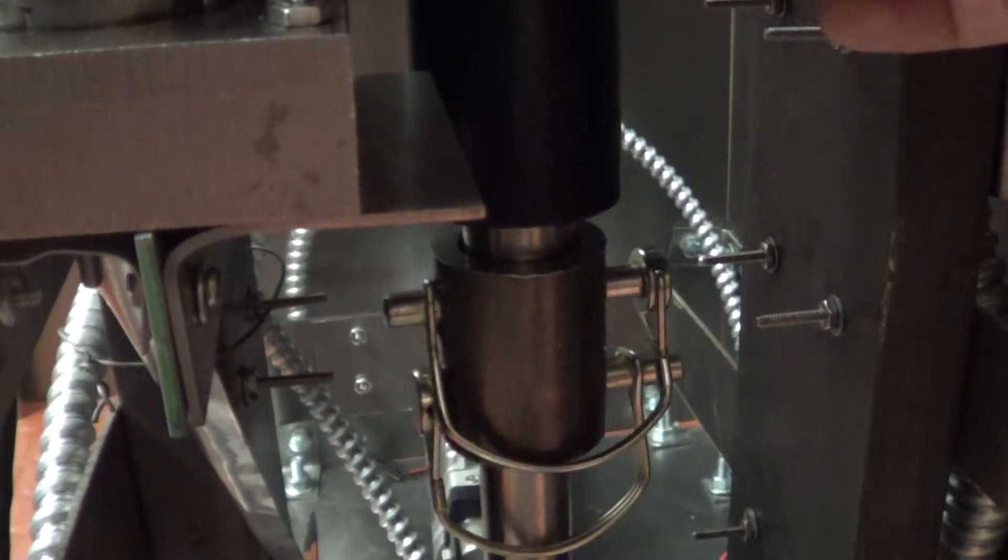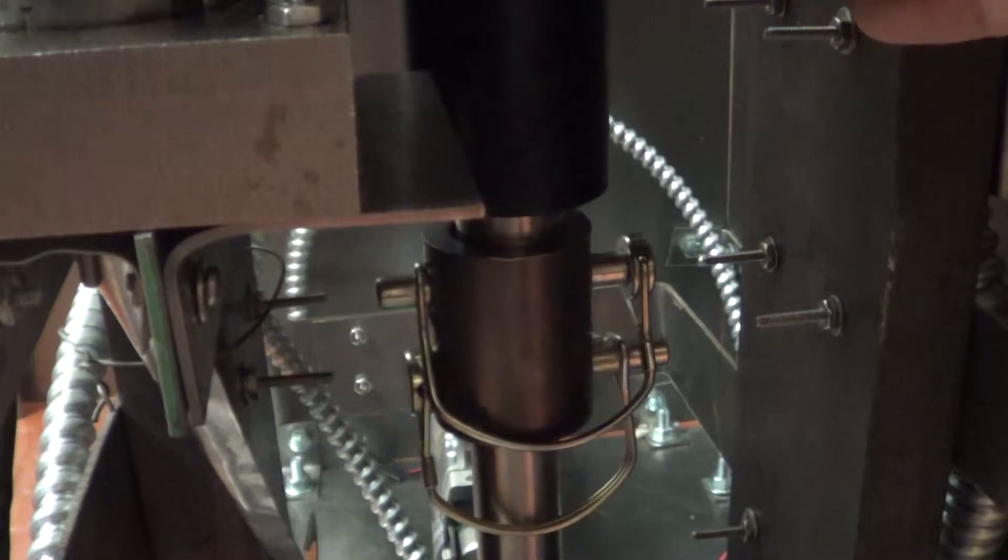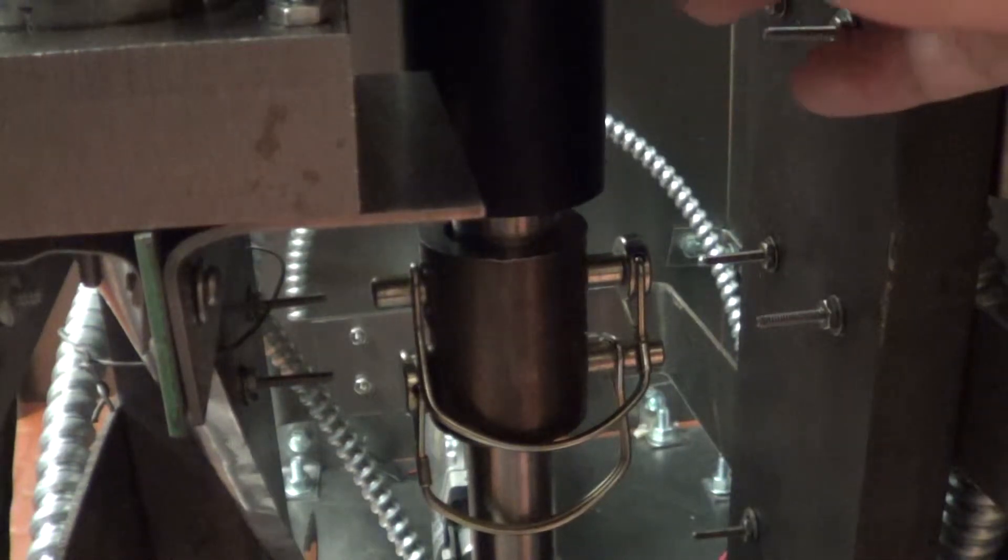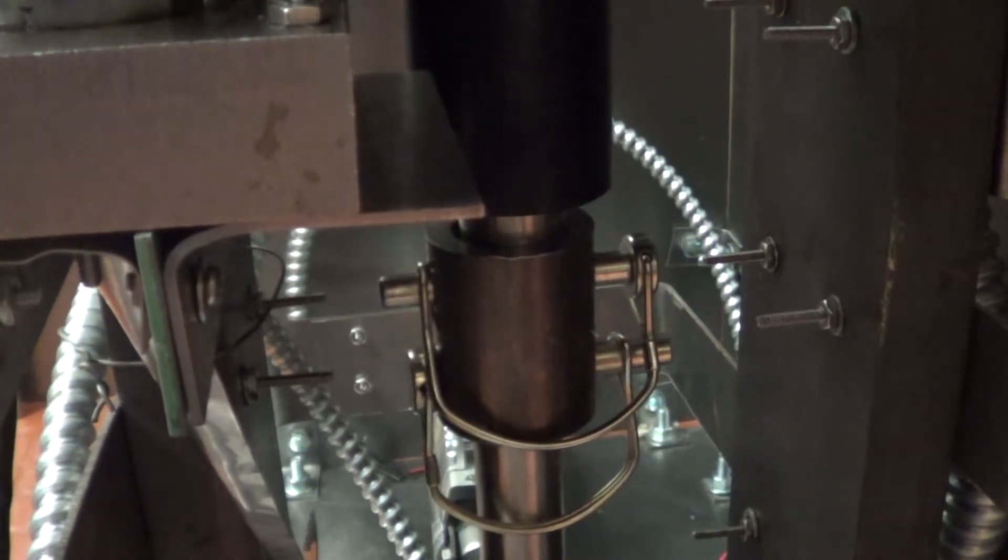And we're using an actuator instead of a hydraulic press because hydraulic presses, if we wanted to get something that was electrically operated, we would have had to pay a lot more money. So, being on a budget, we went with a one-ton actuator. It's the biggest we could get for the money.